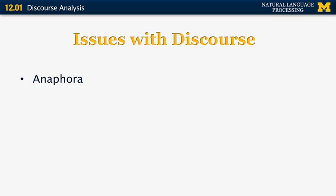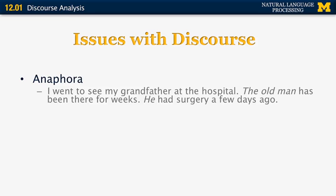The first one is called anaphora. Anaphora is a Greek word and it is used to refer to expressions that correlate with some earlier occurrence in the document. For example, if I say, 'I went to see my grandfather at the hospital. The old man has been there for weeks.' The phrase 'the old man' refers to 'my grandfather' and its use in the sentence is anaphoric. And then in the last sentence, 'He had surgery a few days ago,' we have another instance of anaphora — the pronoun 'he' refers back to 'my grandfather.'